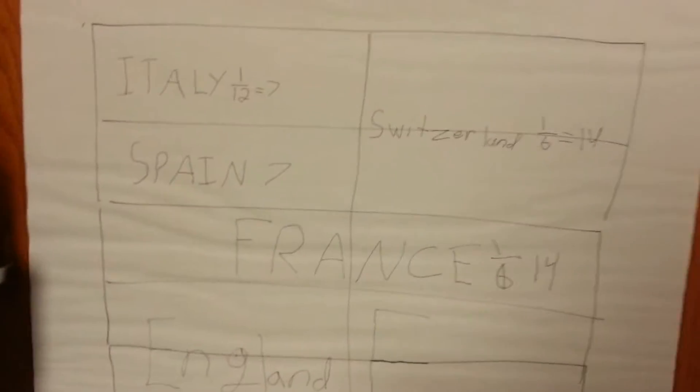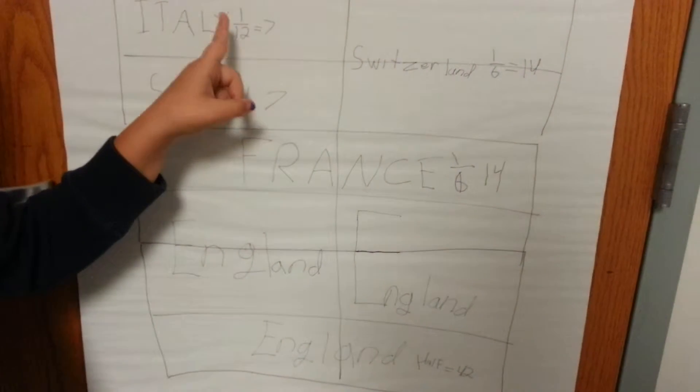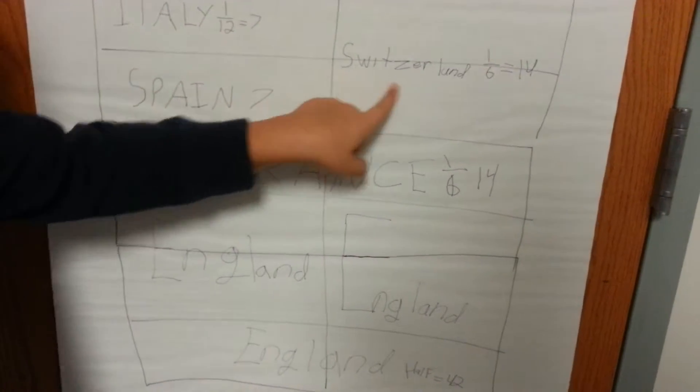Well, we divided it up into twelve boxes. So Italy is one half, which equals seven. One twelfth, which equals seven. Switzerland is one sixth, which equals fourteen.